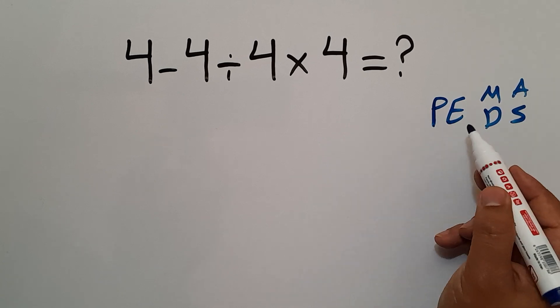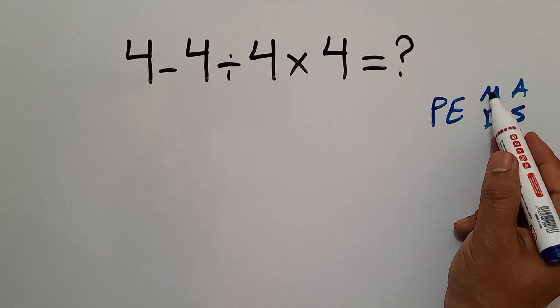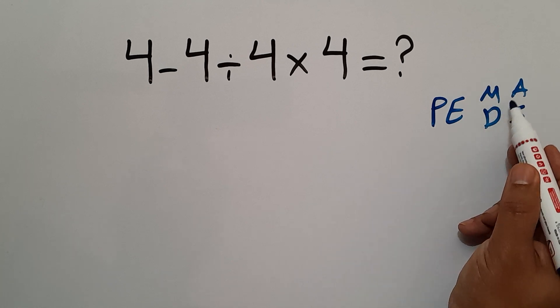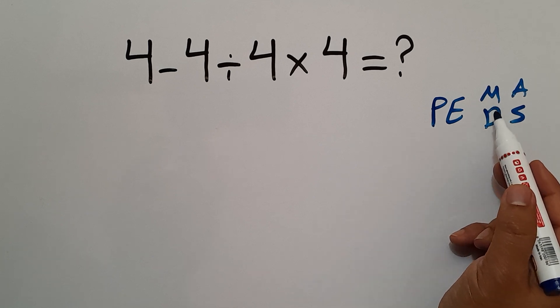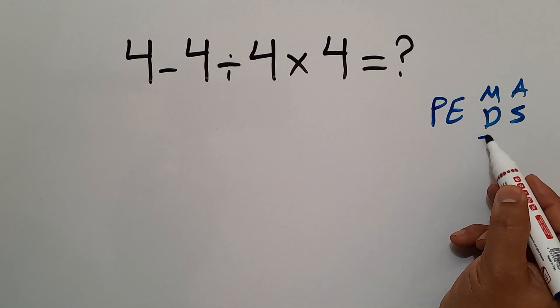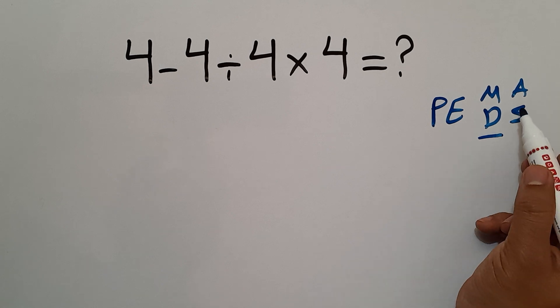We first do parentheses, then exponents, then multiplication or division, and finally addition or subtraction. Remember that multiplication and division have equal priority, and we have to work from left to right. And the same applies to addition and subtraction.